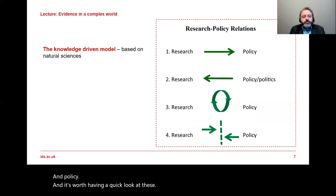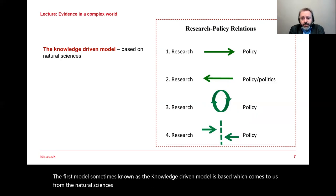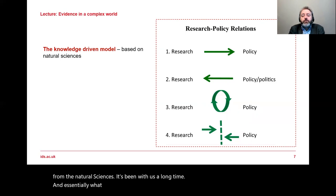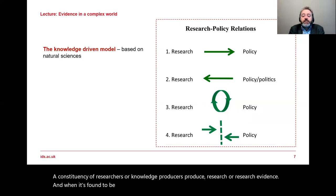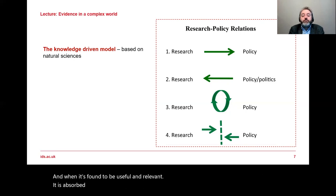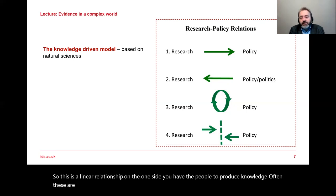The first model, sometimes known as the knowledge-driven model, comes to us from the natural sciences and has been with us a long time. Essentially, it says that a constituency of researchers or knowledge producers produce research evidence, and when it's found to be useful and relevant, it is absorbed into policy formulation, policy making, and policy implementation. This is a linear relationship: on one side you have the experts and scientists who produce knowledge, and on the other side the people who work in policy and use that knowledge.